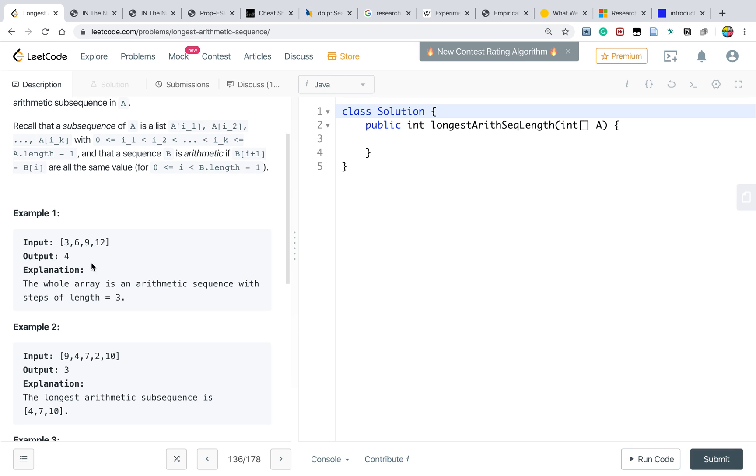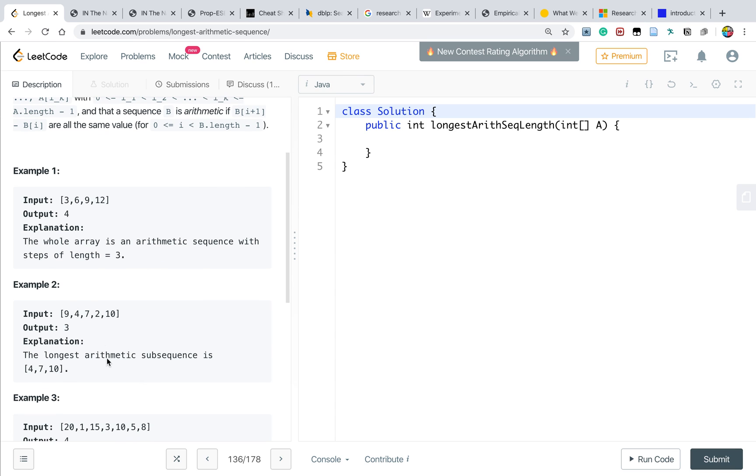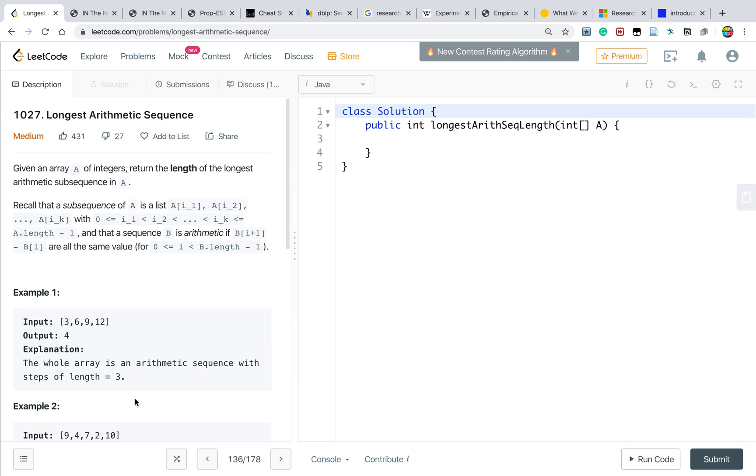Let's see the example. If the given array is 3, 6, 9, 12, we just return 4 because the whole array is a valid arithmetic sequence. And this example too, we just return 3 because the 4, 7, 10 is the longest arithmetic subsequence we can find. Actually this problem has some similarity to the longest increasing subsequence. You can check it out. So basically the solution is similar too.